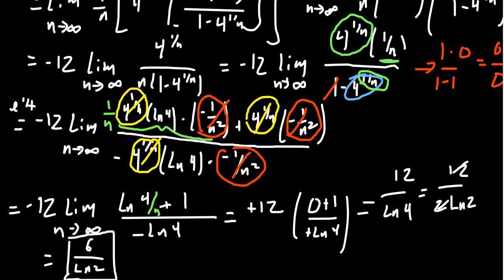If you were able to follow even half of that, you're in a good situation to understand Riemann sums. This example was chosen to be on the harder side, so if you struggle with it that's okay — feel free to watch again and ask questions in the comments. We need to understand how to calculate definite integrals using the definition, but it begs the question: is there an easier way? This is analogous to when we first dealt with derivatives using the difference quotient. The next section covers the Fundamental Theorem of Calculus, which connects area under the curve with anti-derivatives from the previous chapter. Stay tuned.